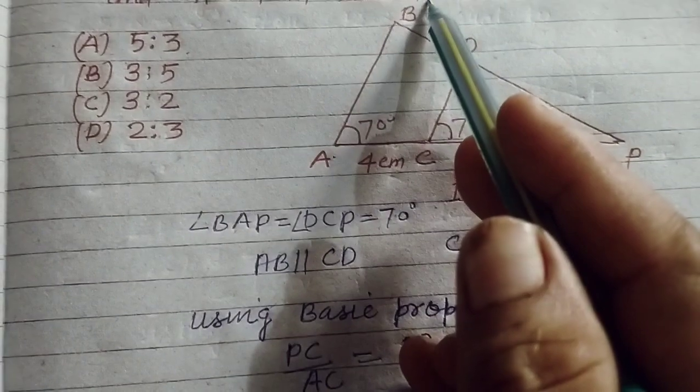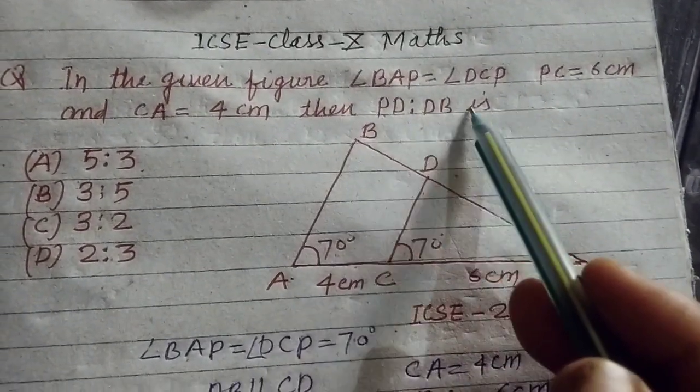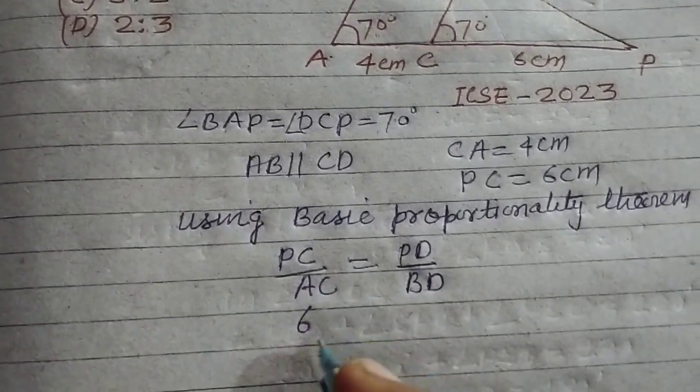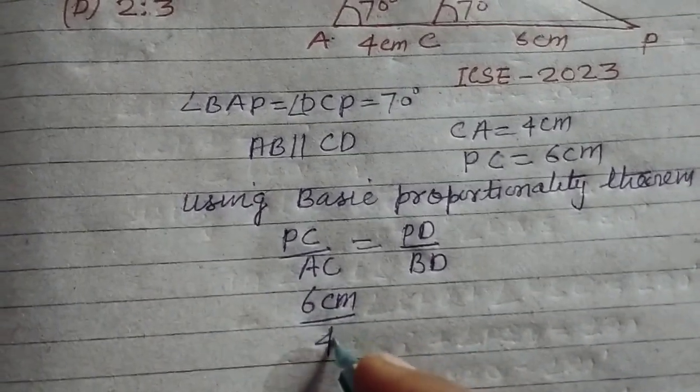Here we want to find out the ratio of PD over BD. Therefore, putting PC is 6 cm and AC is 4 cm.